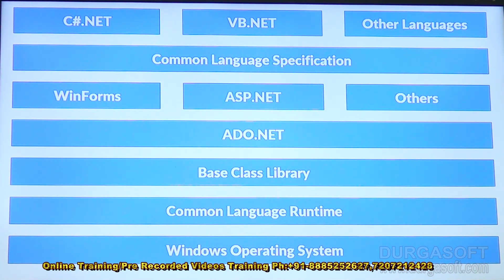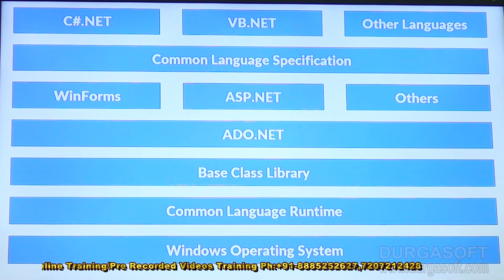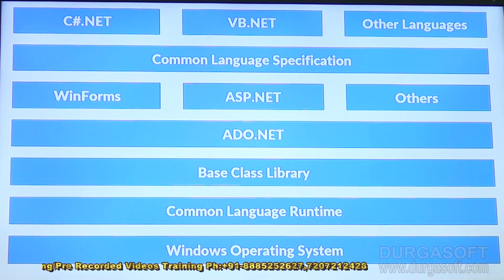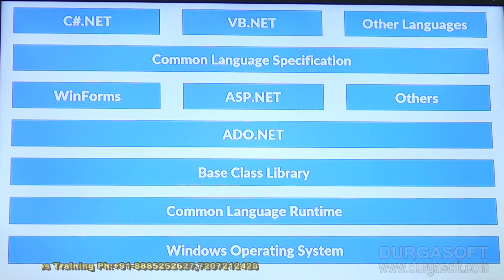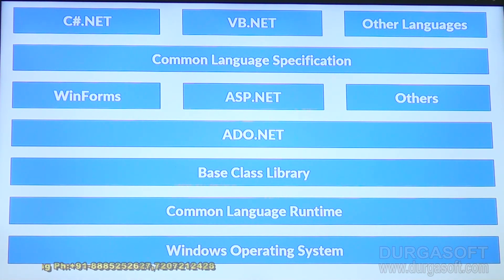The Common Language Specification (CLS) is the common set of concepts that belongs to all .NET languages, such as C# .NET and VB .NET, which we already discussed earlier. Based on this CLS, we have C# .NET, VB .NET, VC++ .NET, Visual J# .NET, F#, and many other languages. These are the complete set of components of .NET, and this complete picture is called the .NET Framework Architecture.